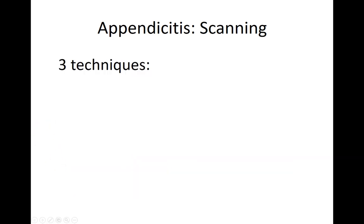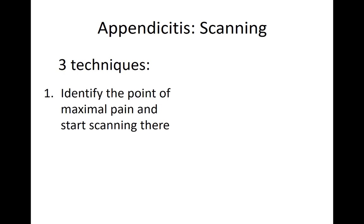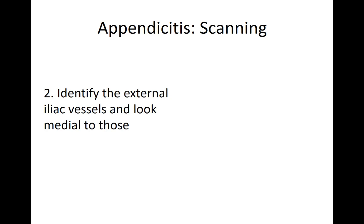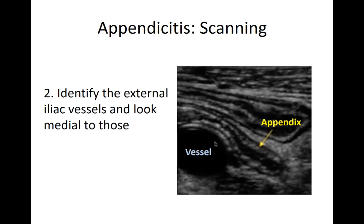There are three basic techniques for finding the appendix. The first and easiest is to start where it hurts — have the patient take their finger and point to the area of maximal tenderness and start there with the linear probe. The second technique, which is very helpful, is to identify the external iliac vessels and look around those. Here's the iliac vessel, and then this thing overlying it — that's the appendix.